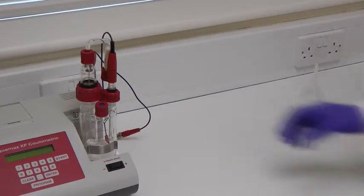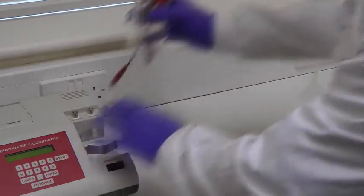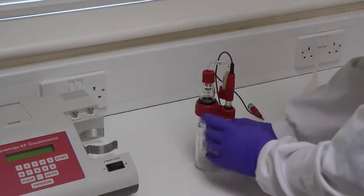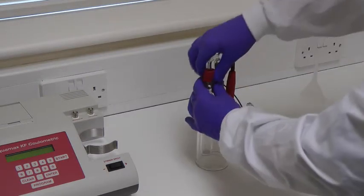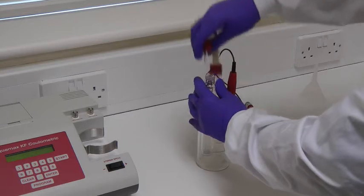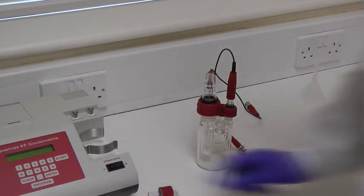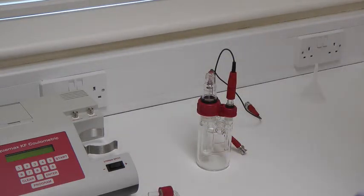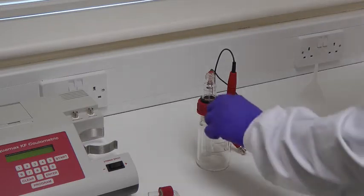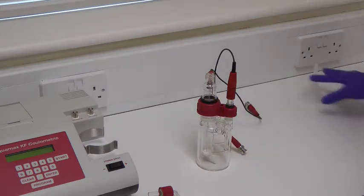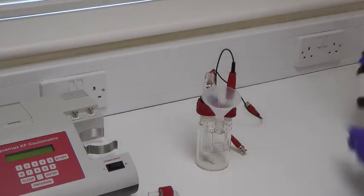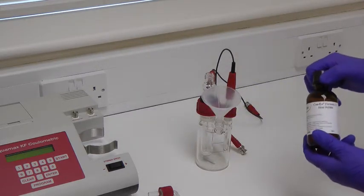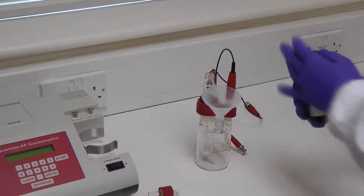Before adding the chemicals, remove the assembled glassware to avoid spillage on the instrument. Remove the injection port and the drying tube and insert the stirrer bar. Add the full 100ml bottle of reagent using the supplied funnel and reconnect the injection sceptre.